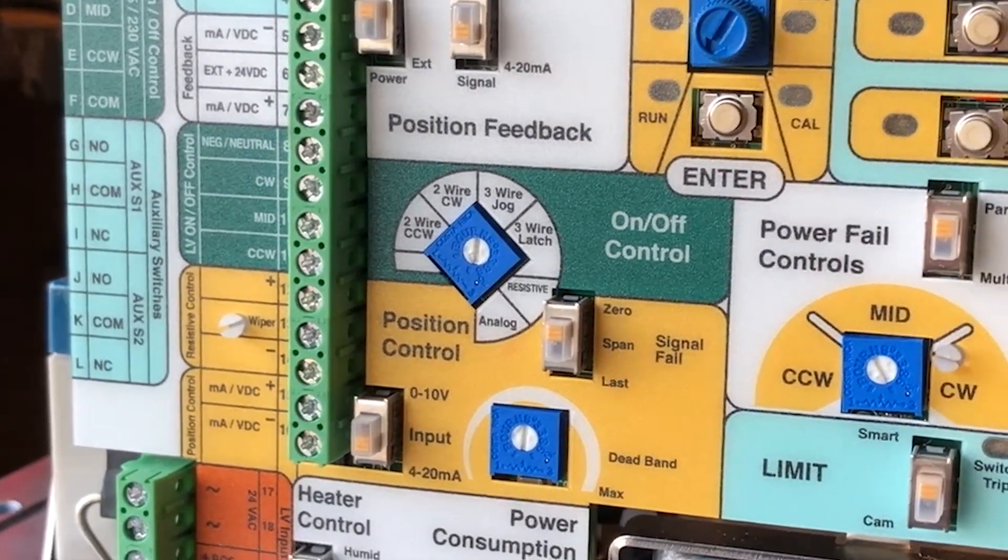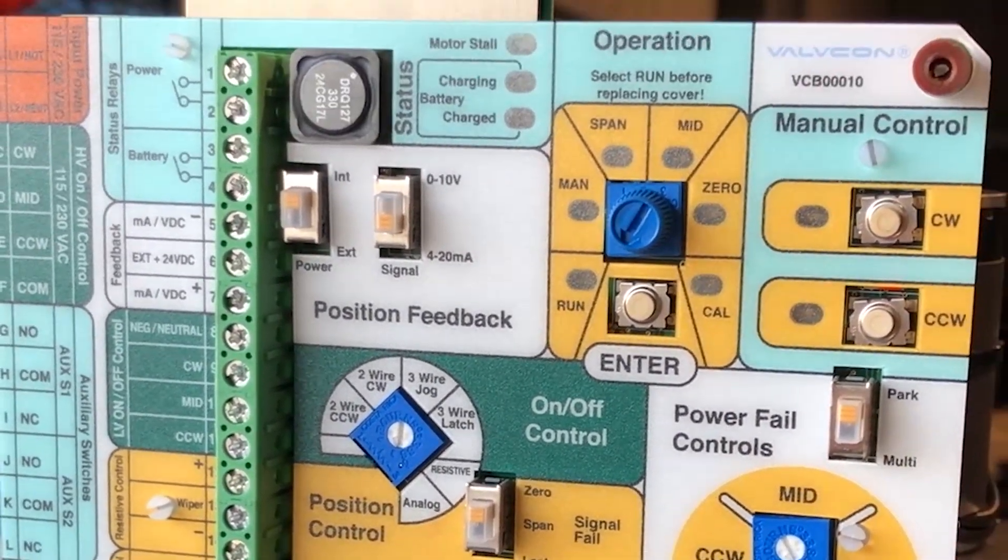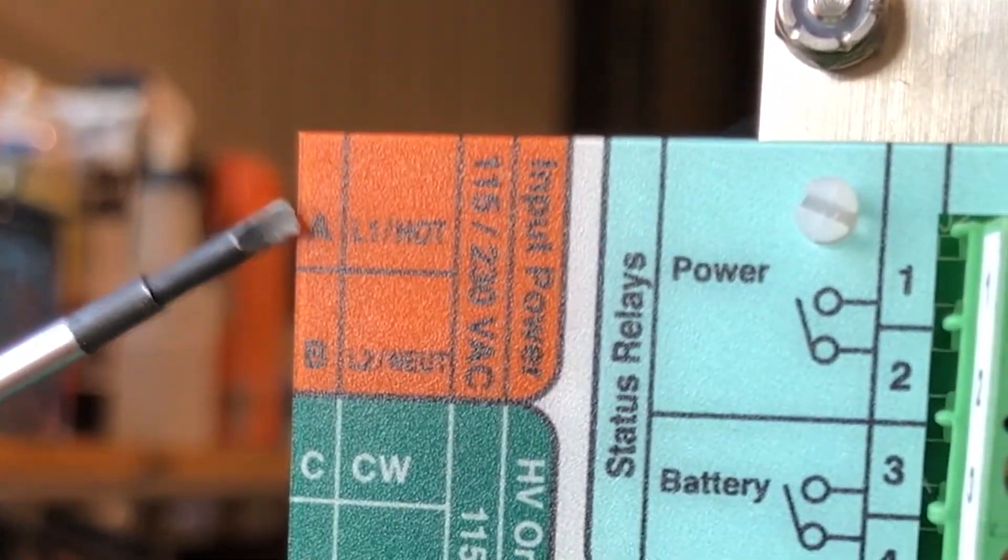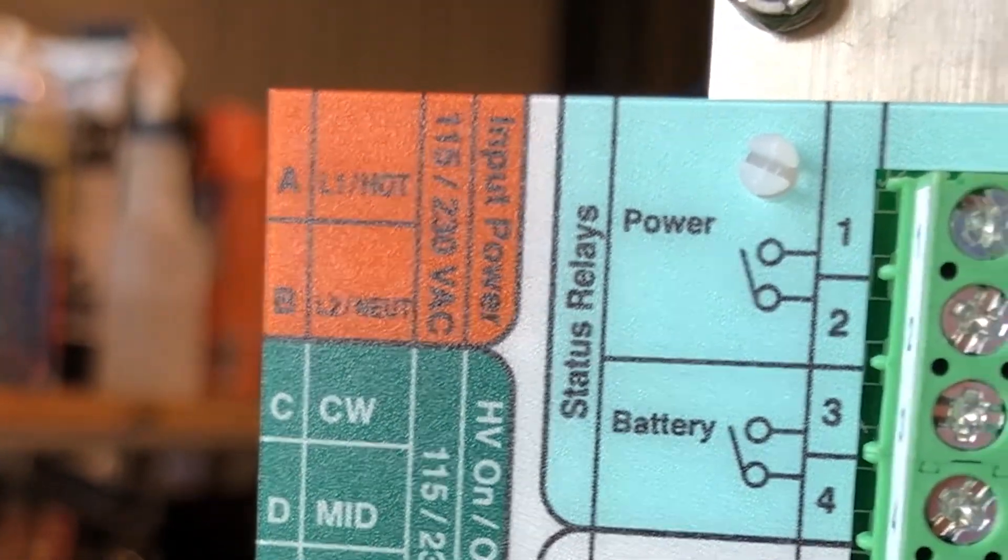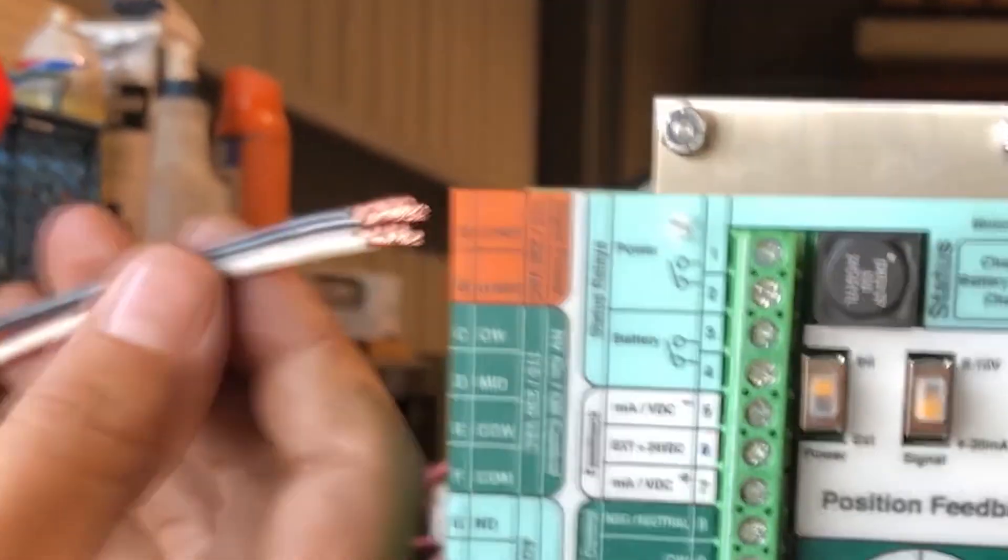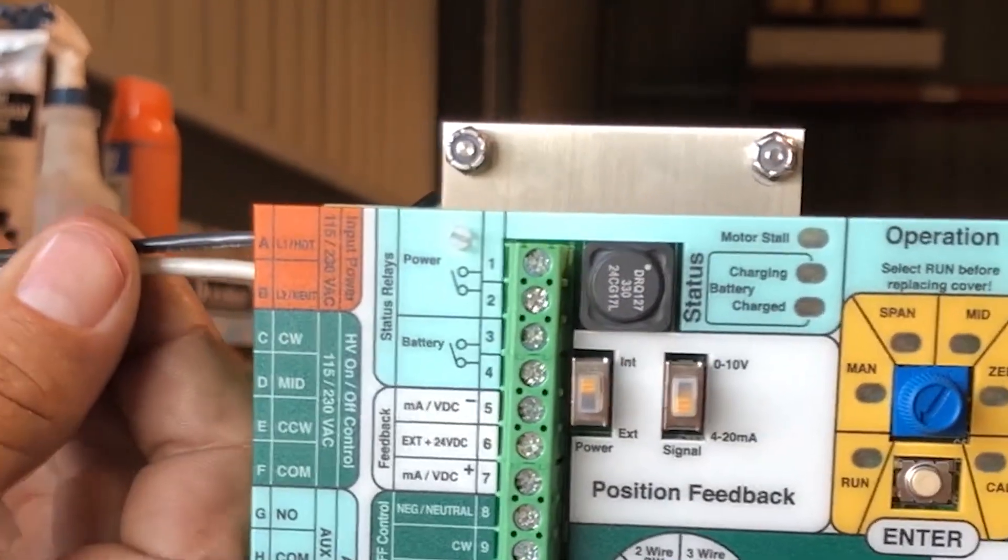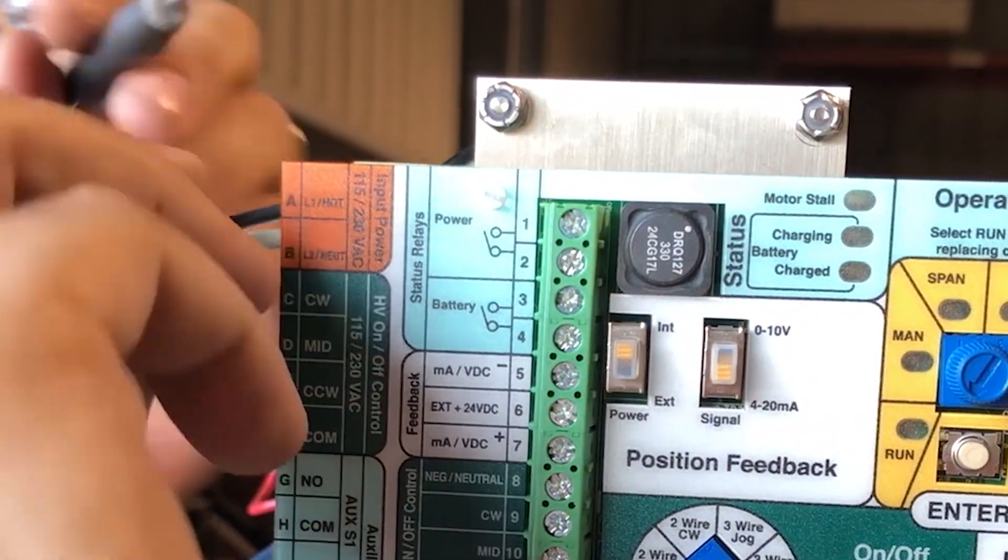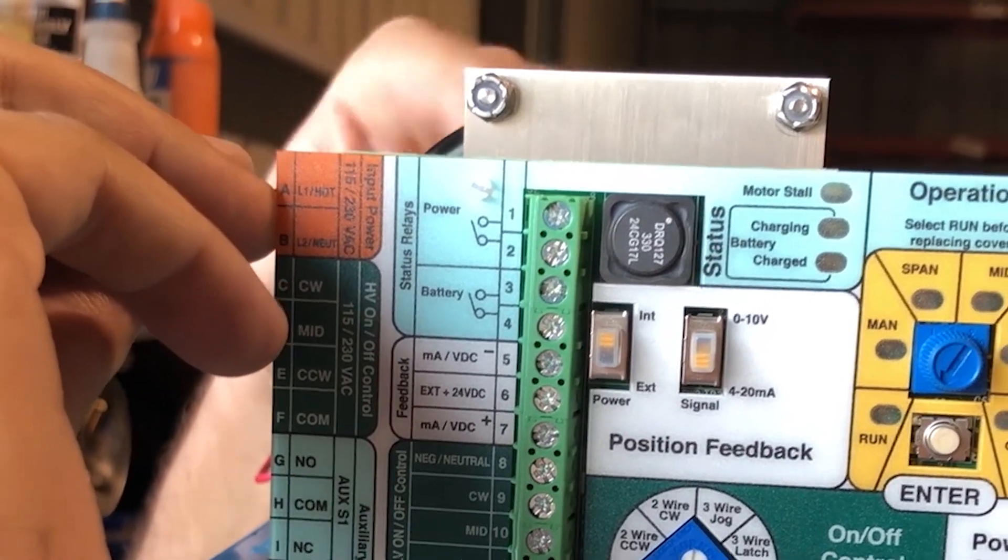First we're going to start off with wiring. You're going to apply your source voltage input power to terminals A and B on the board. Your hot goes into terminal A, your neutral into terminal B.